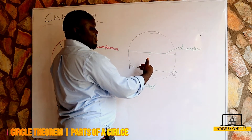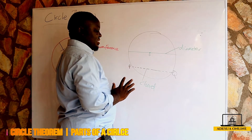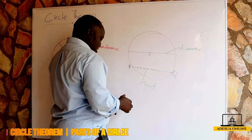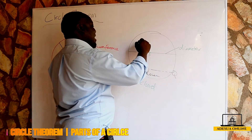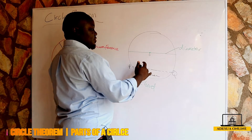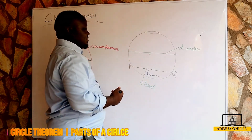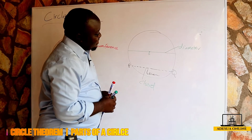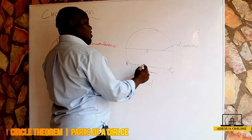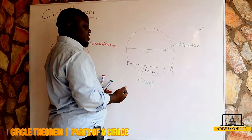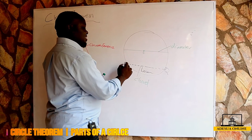A diameter is a straight line which divides the circle into two equal parts. Assuming this is the center, we have the upper part and the lower part, and the diameter divides it into two equal parts. So for a chord, we have the lower segment and the upper segment — or the lower sector and upper sector.